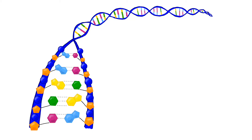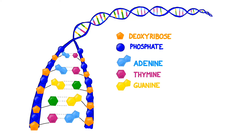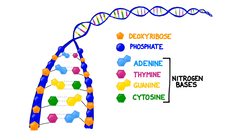The molecule itself is shaped much like a ladder. The outer portions of the molecule are made from deoxyribose sugar and phosphate groups. The rungs of the ladder are made of groups called nitrogen bases. These bases are held together in pairs: adenine always pairs with thymine, and guanine always pairs with cytosine.